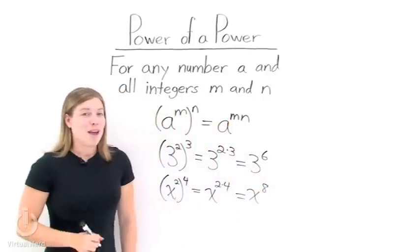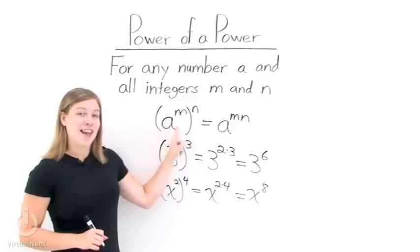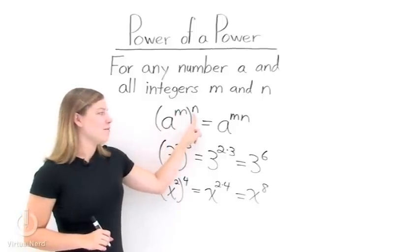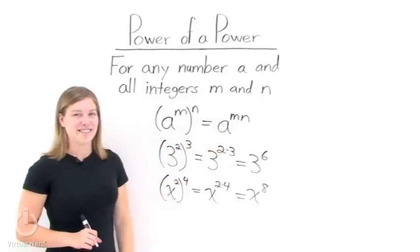So remember, if you have something taken to a power, and you take that whole quantity to a power, all you need to do is multiply the exponents together.